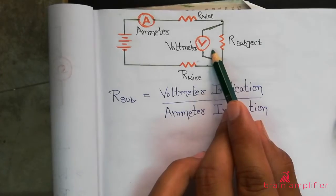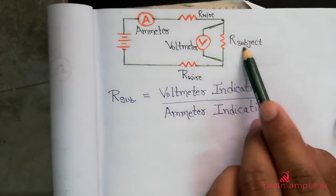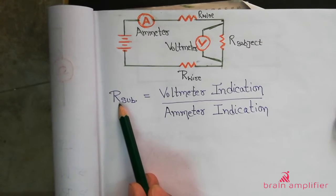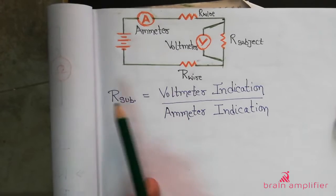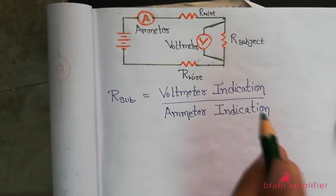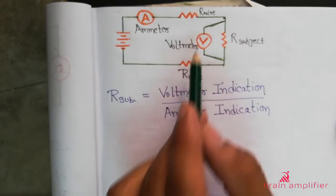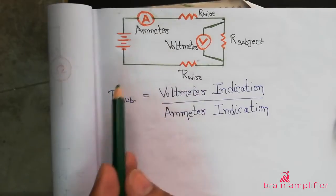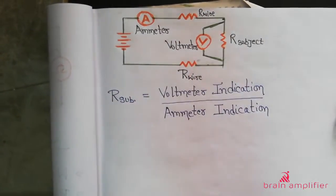I put my voltmeter directly across R_subject only, so the voltmeter indication equals the voltage drop across R_subject. Now I have the voltmeter indication and the ammeter indication. Taking the ratio — voltmeter indication divided by ammeter indication — gives me the R_subject value accurately. I have removed the error introduced by R_wire because I am not measuring the voltage drop across R_wire, so the component of R_wire is removed from the measured resistance.